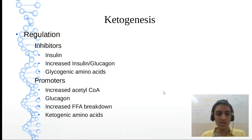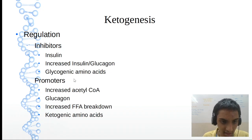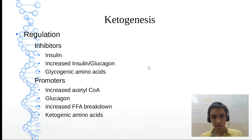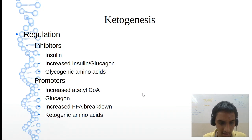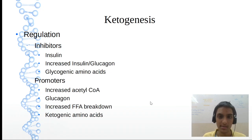Let us see the regulation of ketogenesis. What are the inhibitors and what are the stimulators? Reactions are inhibited by insulin, increased insulin-glucagon ratio, and glycogenic amino acids — which are alanine, aspartate, glycine and methionine. Promoters include increased acetyl-CoA, glucagon, increased free fatty acid breakdown, and ketogenic amino acids. Ketogenic amino acids are leucine and lysine — please remember, they are exclusively ketogenic.